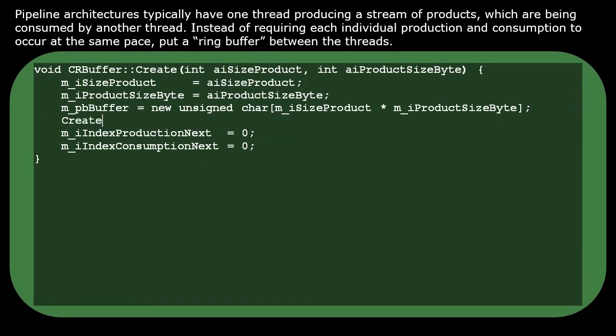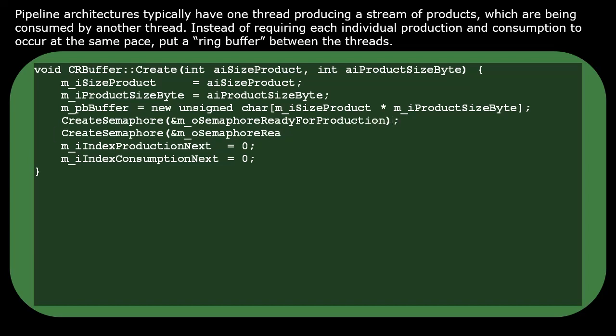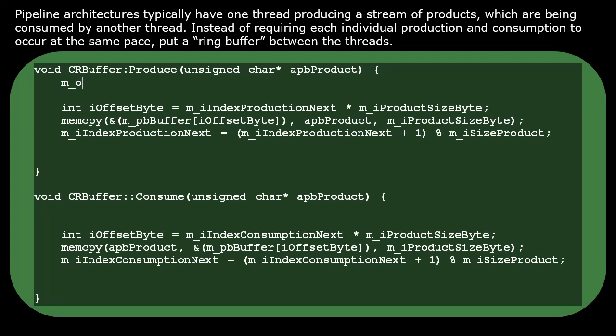We'll get our desired blocking behavior by using two semaphores, one for each thread. For the producer thread, the meaning of its semaphore's resource is the number of empty slots in the ring buffer. That semaphore starts out with its count being the same as the ring buffer's size. If that semaphore's count runs all the way down to zero, then that means the buffer is full, and it will block the producer.